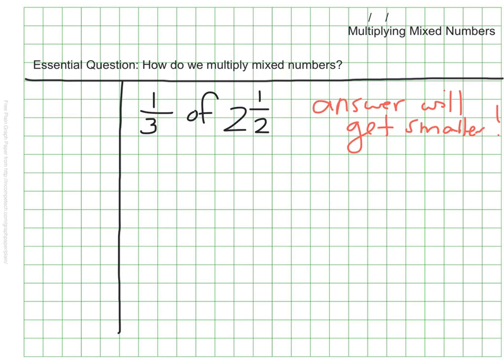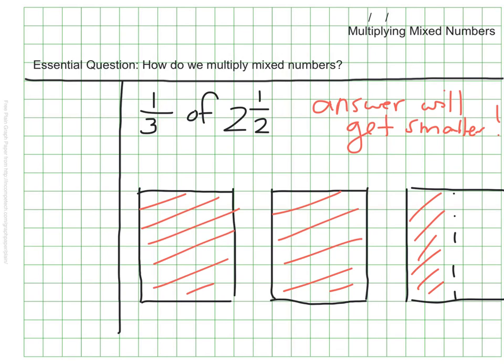So let's take a look at it. Here I'm going to model the two and a half that I'm starting with. I have my red section marked off for my one whole, my second whole, and my half. That part's pretty straightforward.